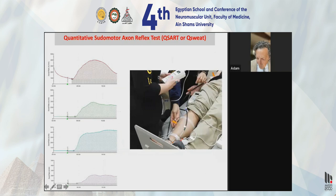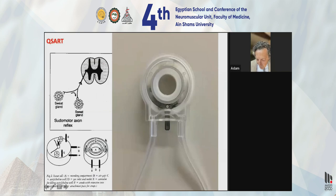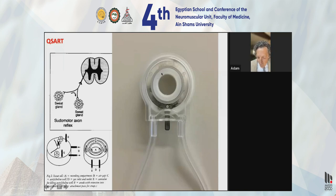The last part of the test is the QSART, measured at four sites. Here is the original QSART diagram by Philip Low, my teacher. Acetylcholine is iontophorized from the outside of the capsule via a cathode attached to a battery, and sweating is measured in the middle. This is not the direct sweat response but the indirect, axon reflex sweat response — you stimulate one sweat gland and measure at another sweat gland nearby.